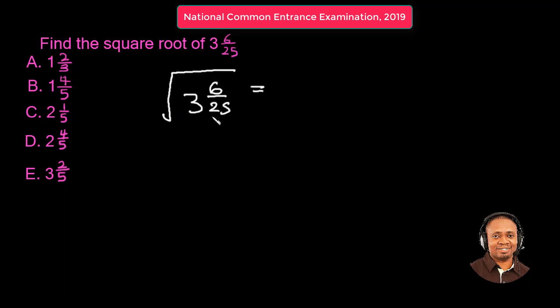First we need to convert this mixed fraction to an improper fraction, which means that we need to multiply the whole number. Let me write it by the side: 3 times 25. We multiply by the denominator which will give us 75.